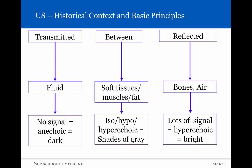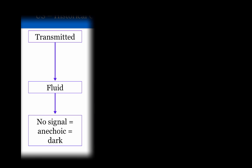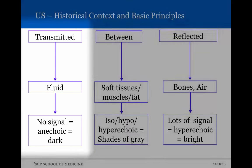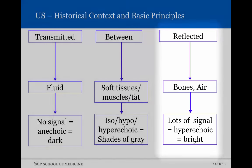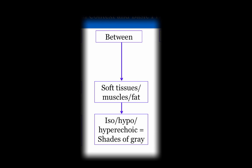Going back to the concept of sound waves interacting with different tissues: they can be completely transmitted, completely reflected, or something in between. If something is made of pure fluid, the sound waves go directly through that fluid-filled structure, resulting in no signal returned — it appears black, or anechoic. If completely reflected, as with bones and air interfaces, everything goes back to the transducer and appears very bright, or hyperechoic, with everything behind it appearing very dark. For most soft tissues, muscles, and fat, the result is different shades of gray — very bright (hyperechoic), very dark (hypoechoic), or similar to surrounding tissue (isoechoic).